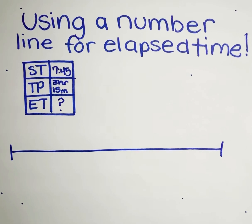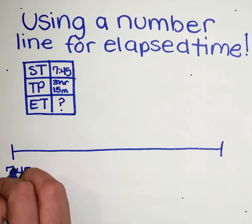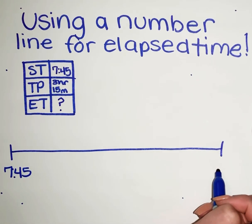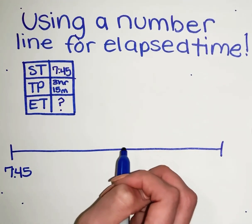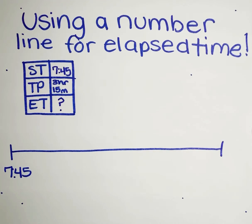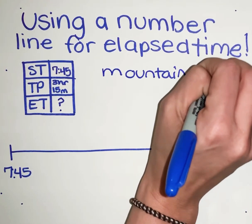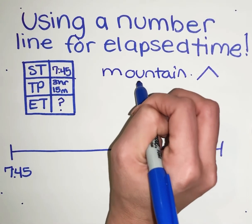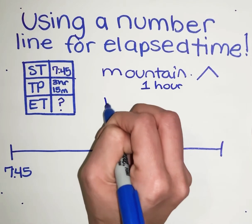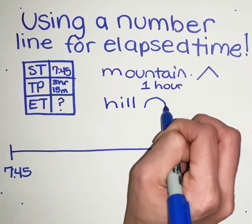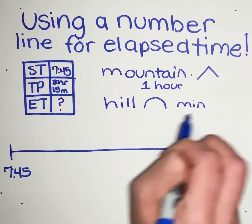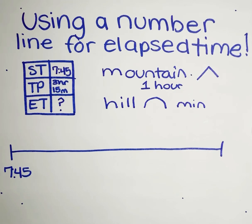I'd start by making a number line first. Because the start time is 7:45, I'm going to put that time right here. The end time is the unknown, but we're going to make jumps that represent the hours and minutes passed. Sometimes people use different kinds of jumps — we have mountains and hills. A mountain represents one hour, and hills represent minutes.